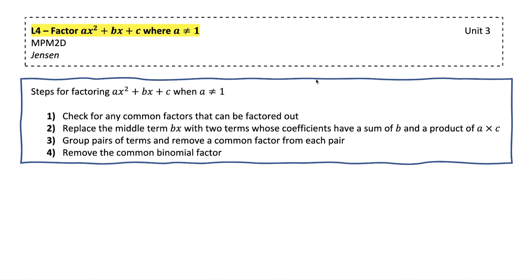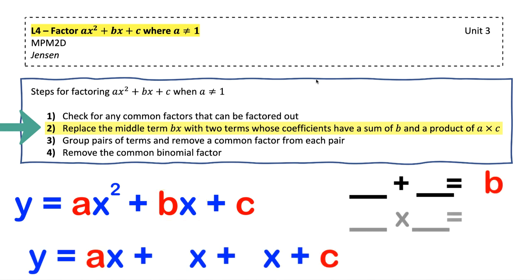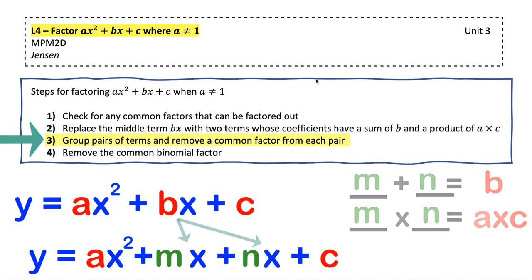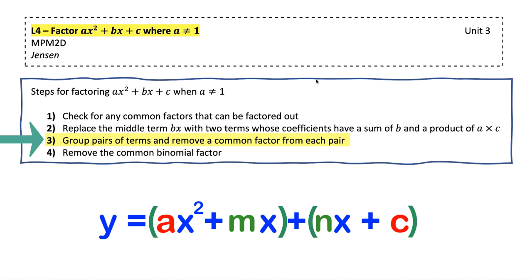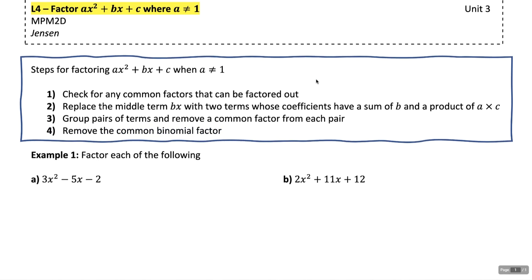Anytime we're factoring these quadratics we follow four steps. Step one: check for any common factors that can be factored out — maybe that a value is a common factor and you can use the method from the last lesson. Step two: replace the middle term bx with two terms whose coefficients have a sum of b and a product of a times c. Step three: group pairs of terms and remove a common factor from each pair. Step four: remove the common binomial factor.